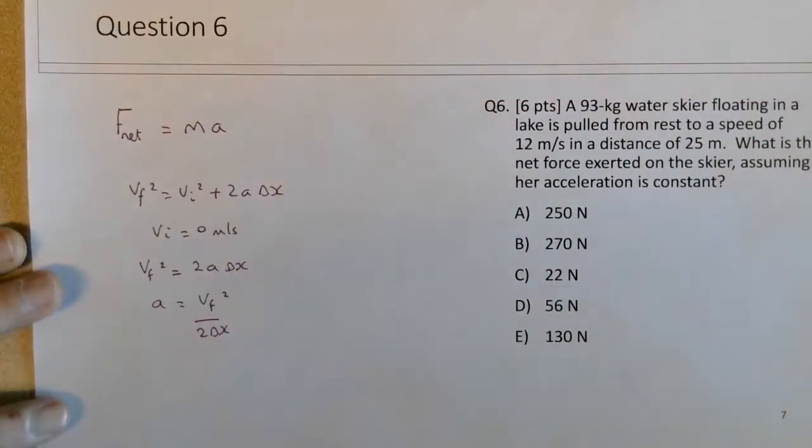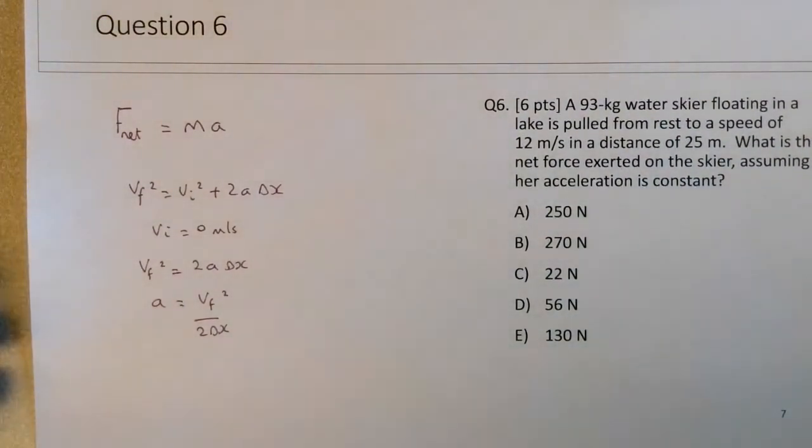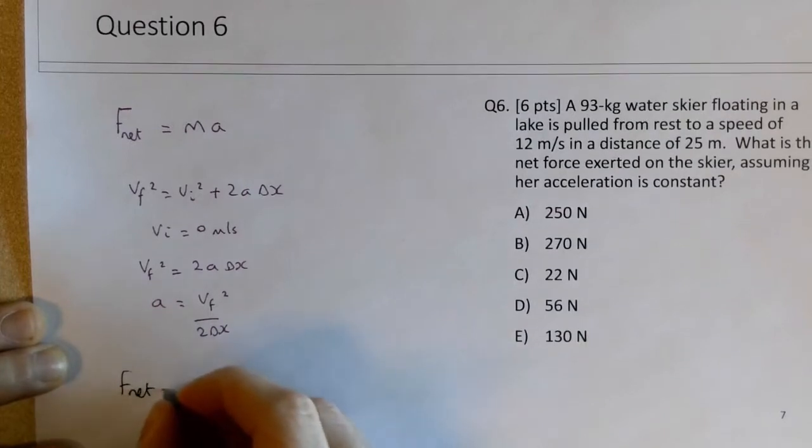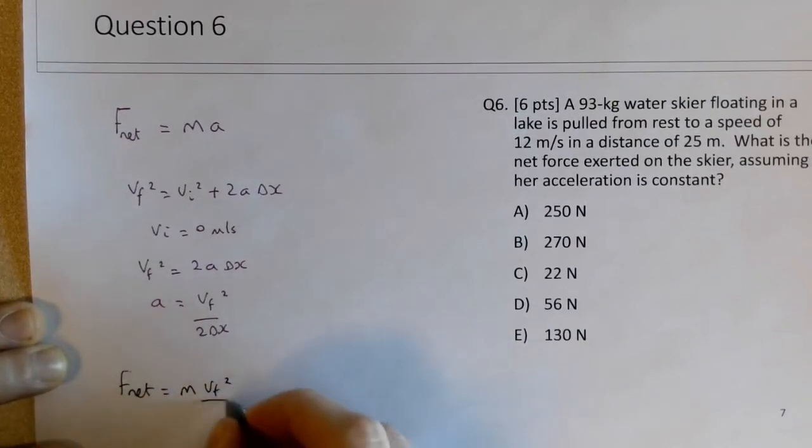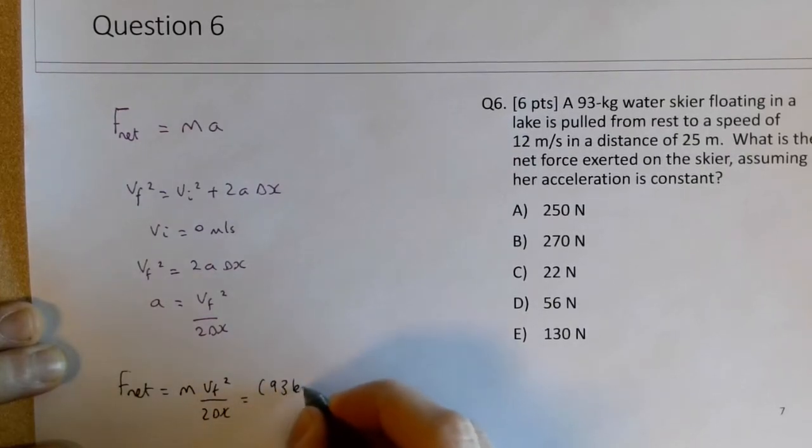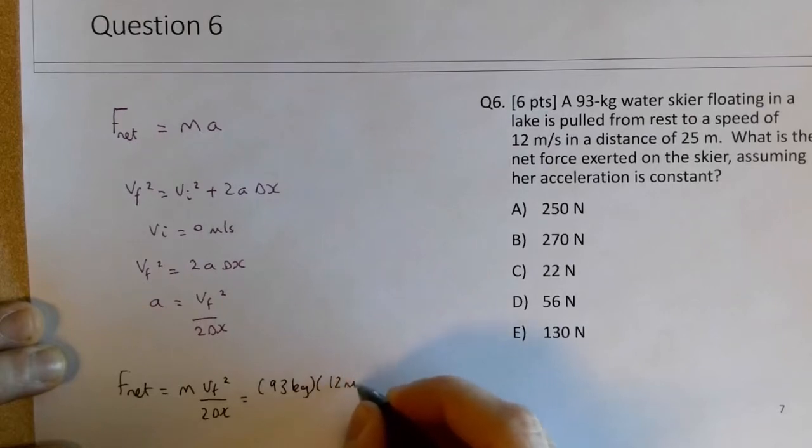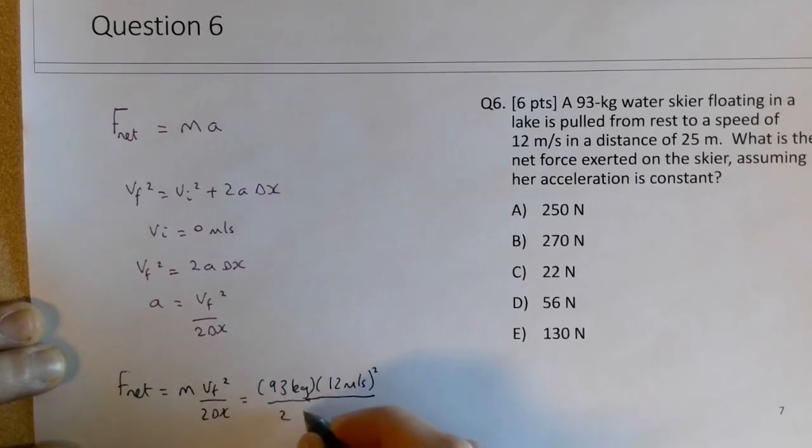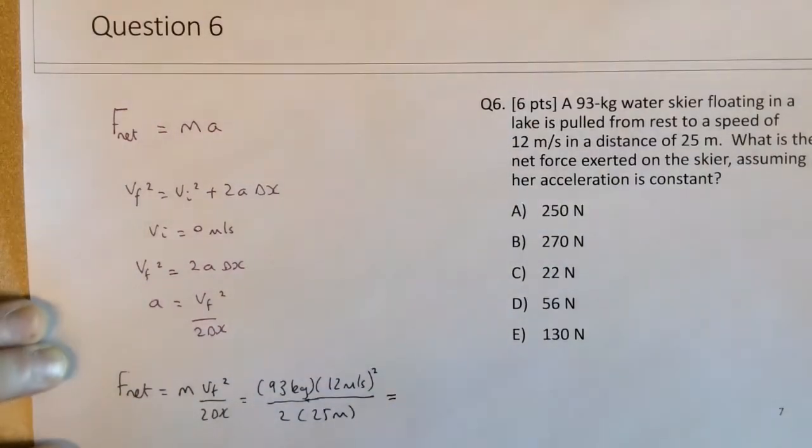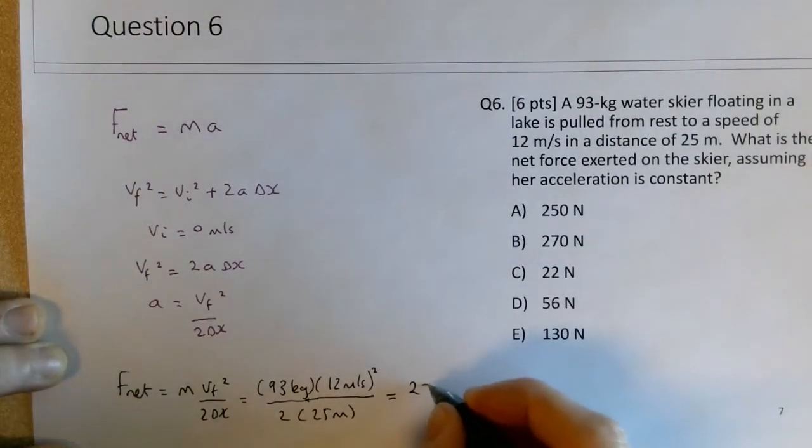And now we can solve the problem. So if we write F net will be equal to the mass times vf squared divided by 2 delta x, that's 93 kilograms. Final speed is 12 meters per second, I'll just square all that, all divided by 2 times the change in the distance of 25 meters, and that is equal to 270 newtons.